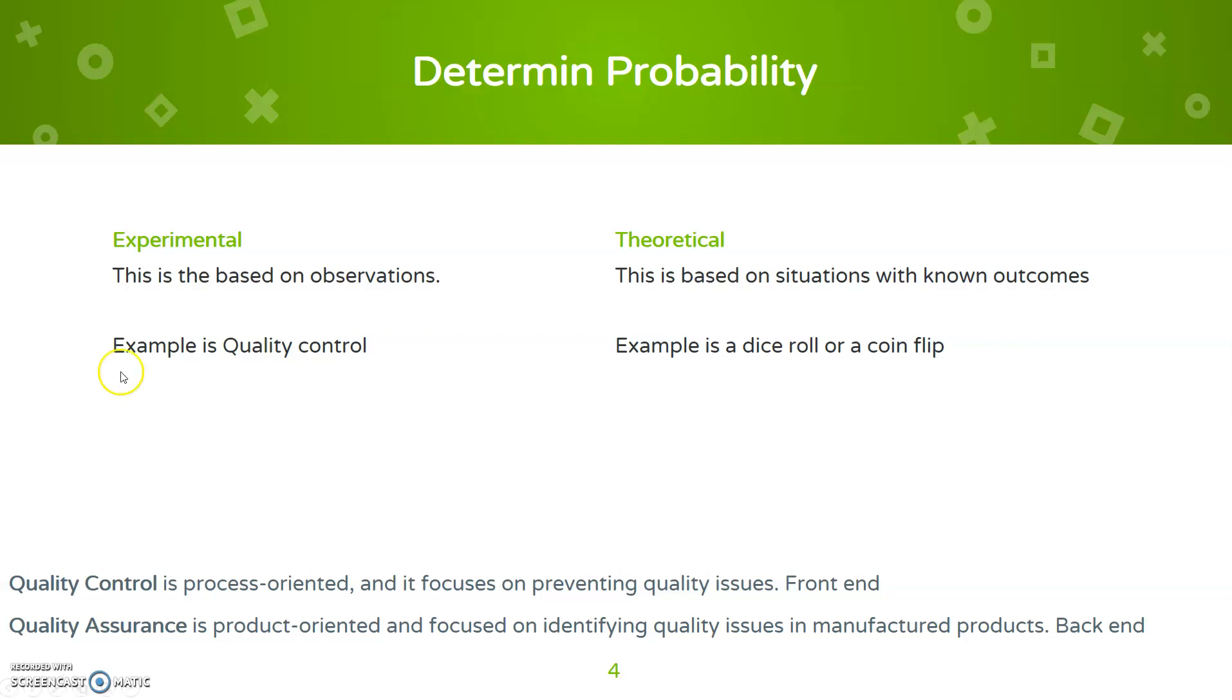I want to emphasize quality control and quality assurance. Quality control is process-oriented, meaning it's focusing on preventing quality issues in the process. So you're controlling the quality throughout the process, looking at dimensions and continuing down the line before the final product. This is front-end heavy.